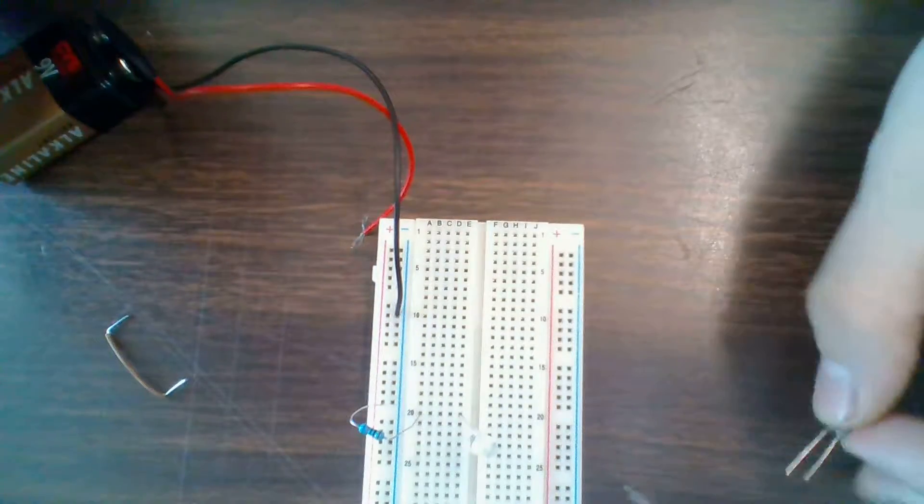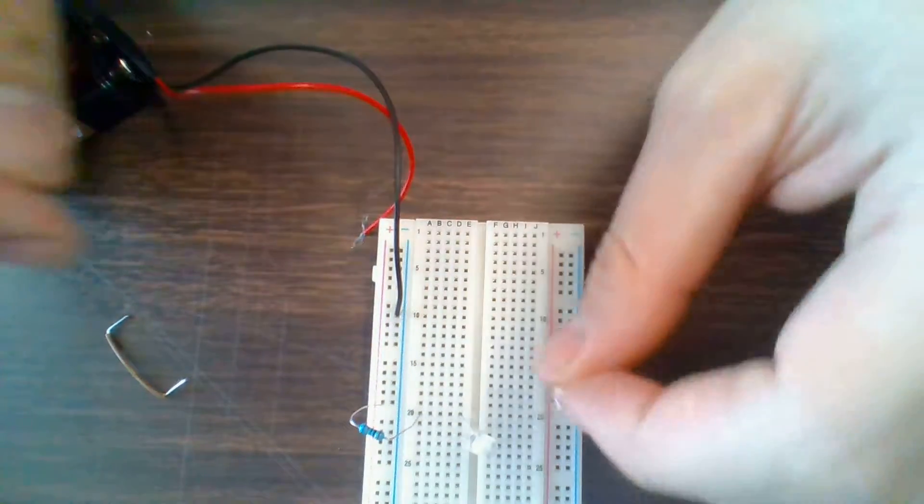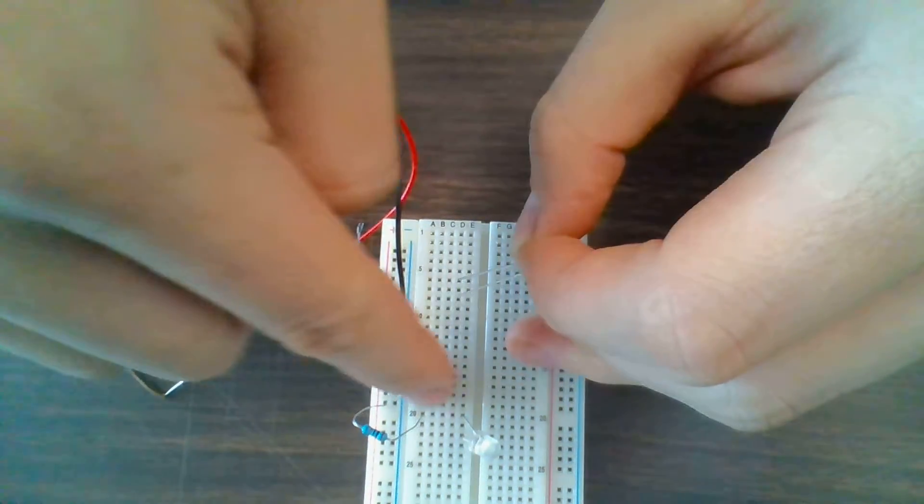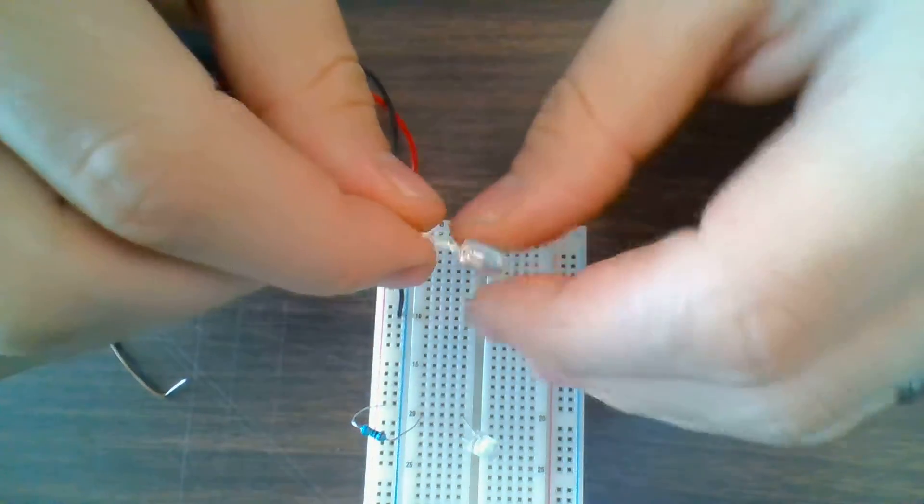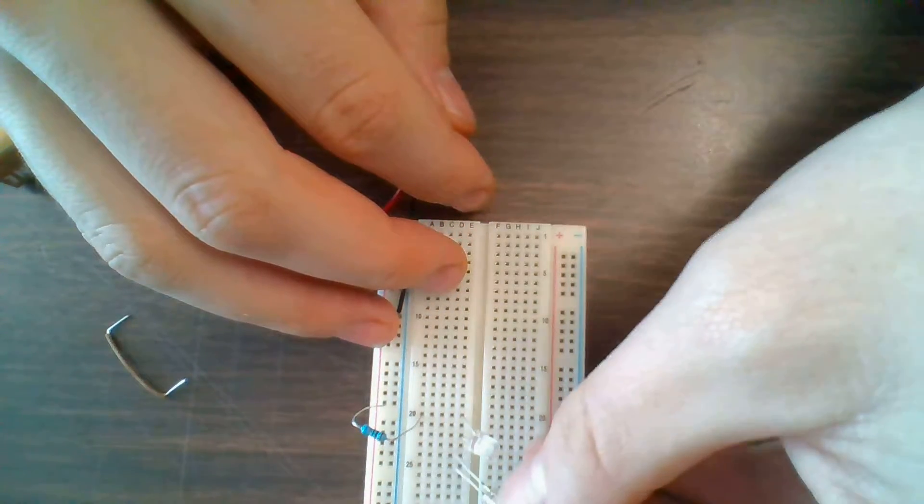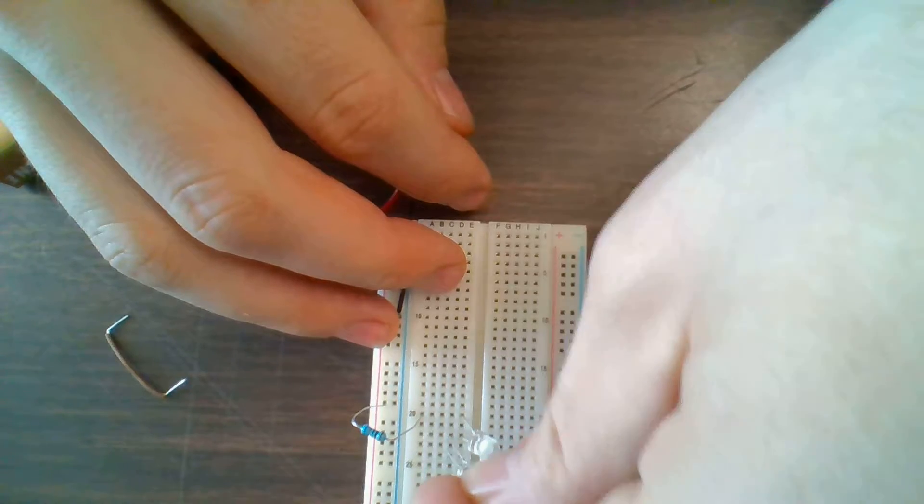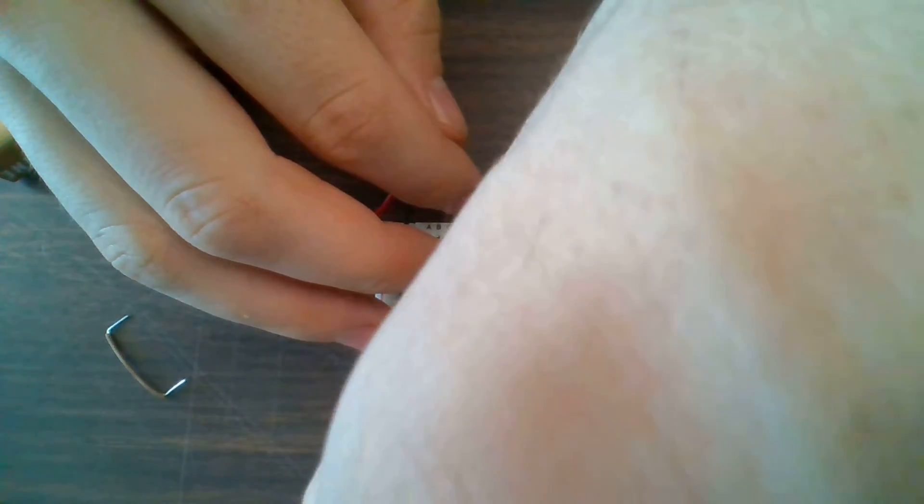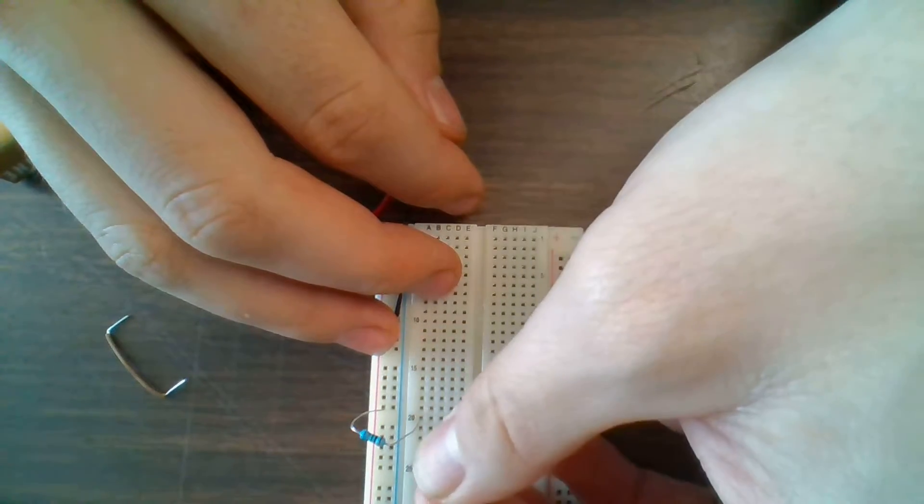So I'm going to take that wire out and I can take my, again, positive, because the electricity is flowing from positive through here. So I'm going to connect my positive end of the LED to the negative end of my first LED and I'm going to skip two rows again.